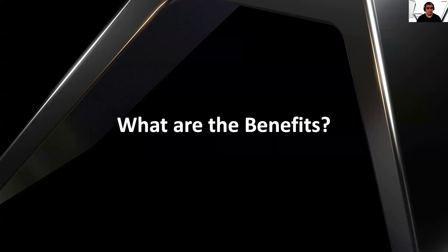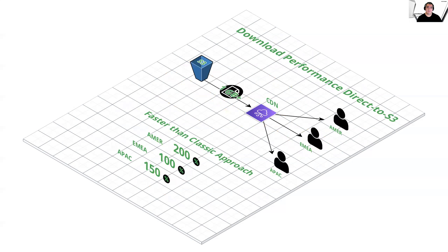What are the benefits? Looking at download performance, we get the opportunity to cache at edge locations. By doing this, repeated download attempts for the same object from the same region can be nearly instantaneous. In different regions, we see improvements of 200% in the Americas, 100% in EMEA, and 150% in APAC.